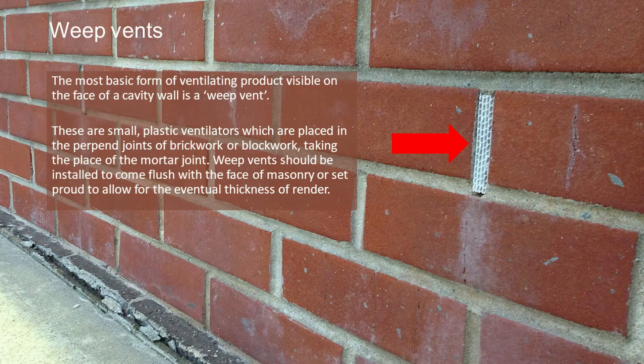The most basic form of ventilating product visible on the face of a wall is a weep vent. These are the small plastic ventilators that you see placed in the perpen joints of brickwork or blockwork, and they take up the space of one of the mortar joints.